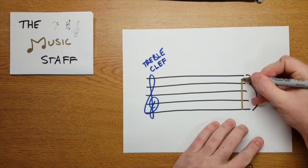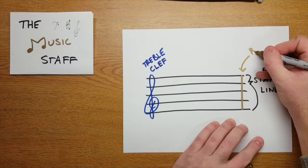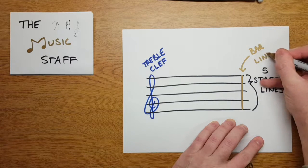When we draw a line like this, it's called a bar line. It helps organize notes and rhythms into groups.